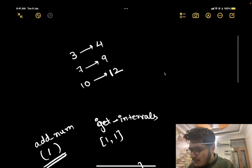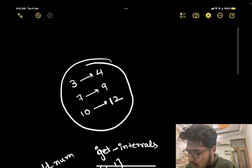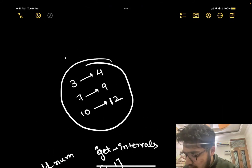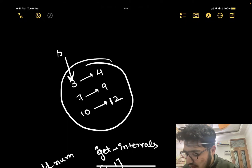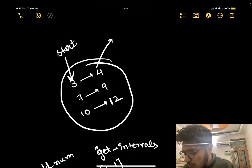Basically, what I am going to do in this question is create a map where the key represents the starting of the interval and the value represents the end of that interval.